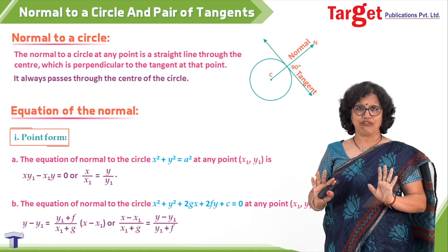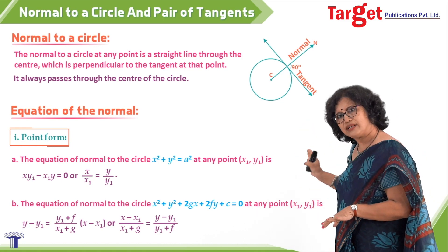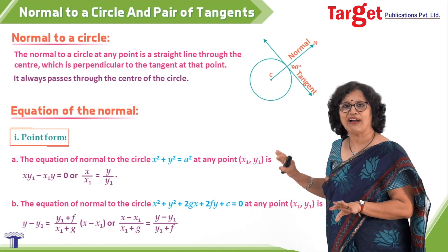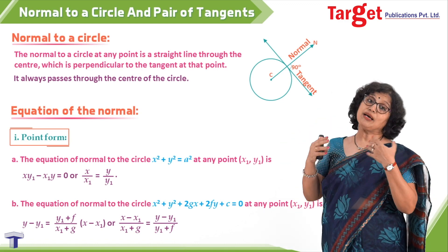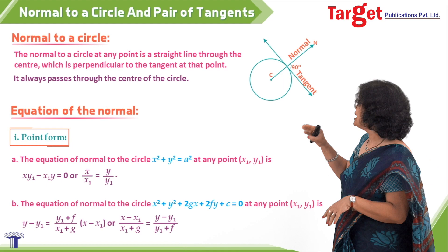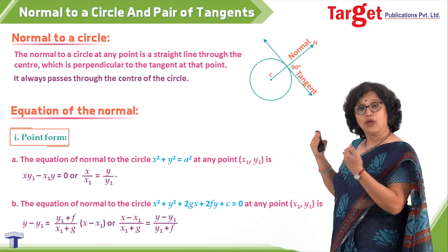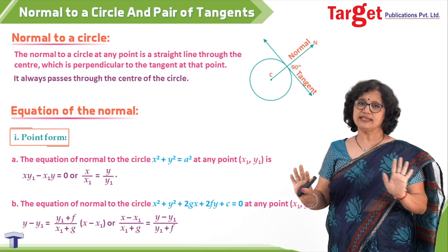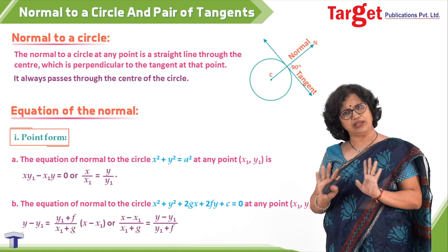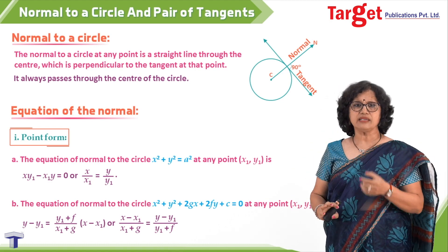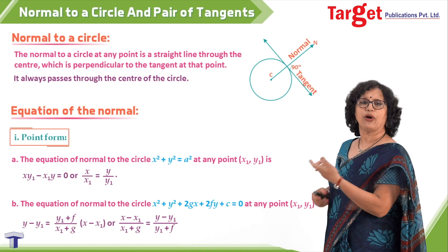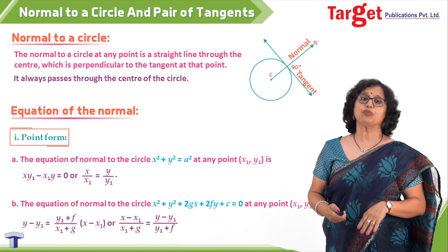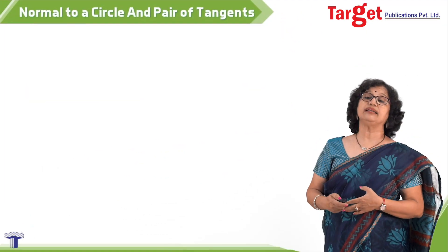Some people write the same equation with all x terms on one side and all y terms on the other. You can also write it as (x − x1)/(y − y1) = (x1 + g)/(y1 + f). The choice is entirely yours. The basic requirement is that you know the slope and the point so you can write the equation of the normal.